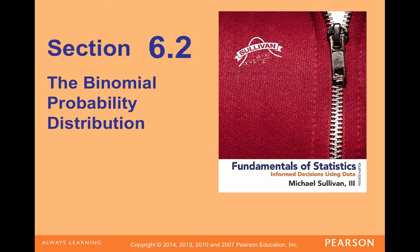So in 6.1 we introduced the discrete probability distributions, and just the main thing was that the sum of the probabilities had to equal 1, and each probability had to be between 0 and 1. And there's all different types of discrete probability distributions, but there's a very special one called the binomial probability distribution.